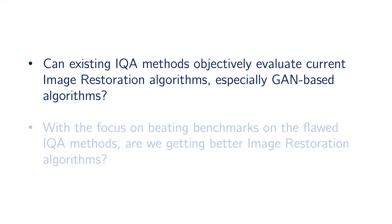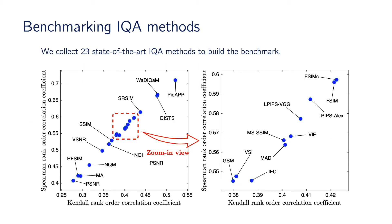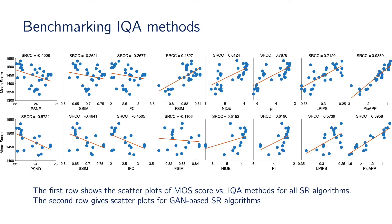Based on the PIPAL dataset, we first build a benchmark for IQA methods to answer the first question: can existing IQA methods objectively evaluate current image restoration algorithms, especially GAN-based algorithms? We collect 23 state-of-the-art IQA methods to build the benchmark. PIPAL dataset poses a great challenge to IQA methods. Even the best methods provide only 0.7 Spearman correlation scores, which is much lower than their performance on previous datasets, which is about 0.9.